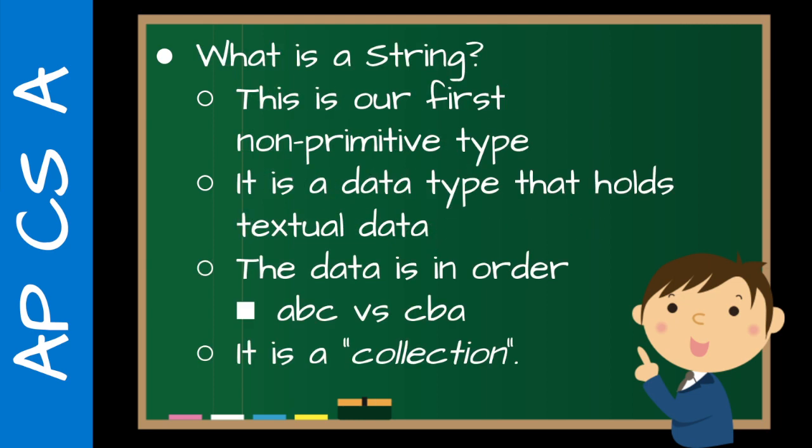So what is a string? For students, this is where we emphasize that this is our first non-primitive type. Part of the way we know that is that String is capitalized. For all of our primitive types — int, double, boolean — they are all lowercase. And that's an important distinction that gives students a little bit of information about that particular object.